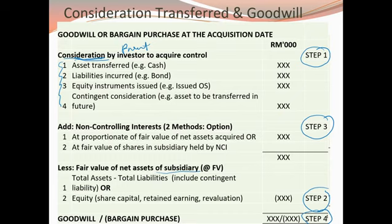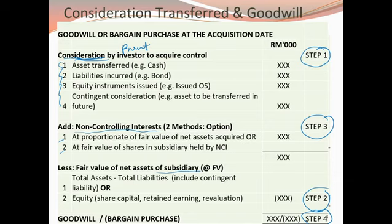Step three, before we can get the amount of goodwill or bargain purchase, we need to add the non-controlling interest. There are two methods for calculating NCI: the first is the proportionate share of the fair value of net assets acquired; the second is based on the fair value of shares in the subsidiary held by the non-controlling interest. For the purpose of this lesson in consolidated accounts and business combination, we are only looking at method one — the proportionate share of the fair value of net assets of the subsidiary.